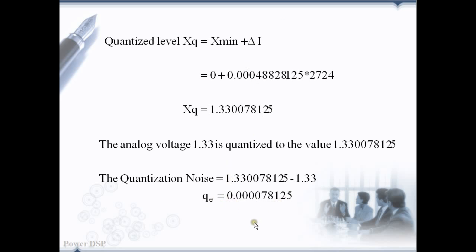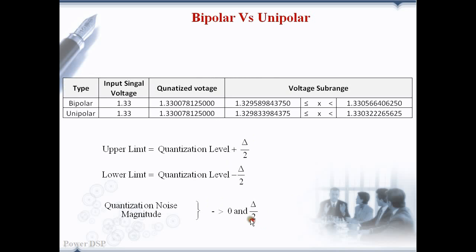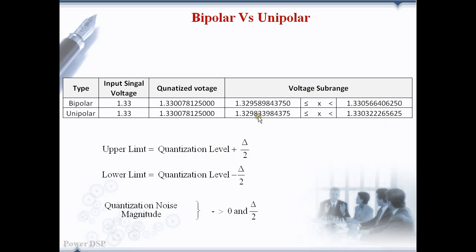Now let's compare how the analog voltage 1.33 volts is quantized in bipolar and unipolar quantizers. In this table we can see that 1.33 volts is quantized to the same value in both cases, but the interval mapped to that quantization level is different. The interval depends on the step size, and the step size of the unipolar quantizer is half the value of the bipolar quantizer. The upper limit of the interval is given by adding half the step size to the quantization level, and the lower limit is given by subtracting half the step size from the quantization level.